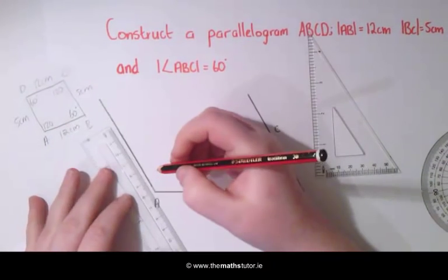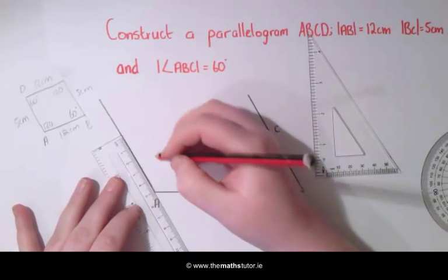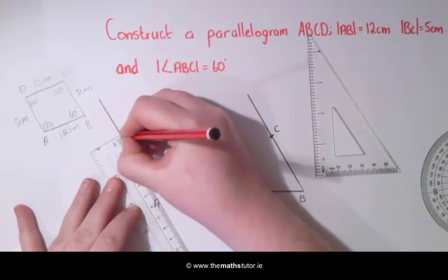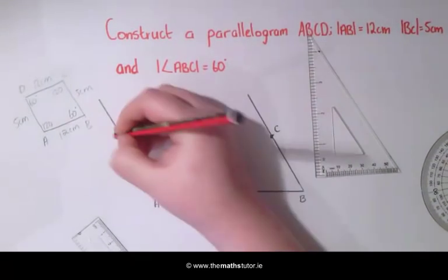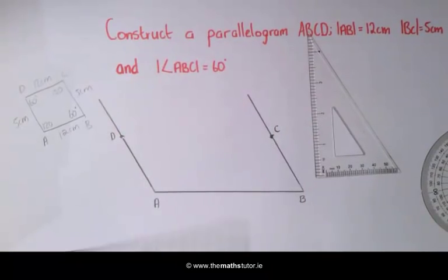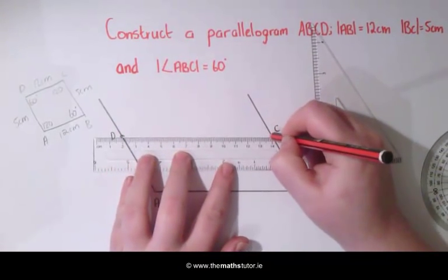This side is also to be 5 cm so we are going to mark this in. And this here is our point D. We are now going to join C and D together.